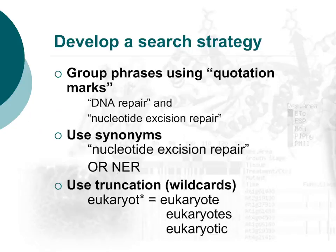You can also use an asterisk as a wildcard to truncate terms. This allows you to search for alternative spellings, alternative terms, and pluralization. For example, placing an asterisk after eukaryote will pull up search terms eukaryote, eukaryotes, and eukaryotic that might be found in results.